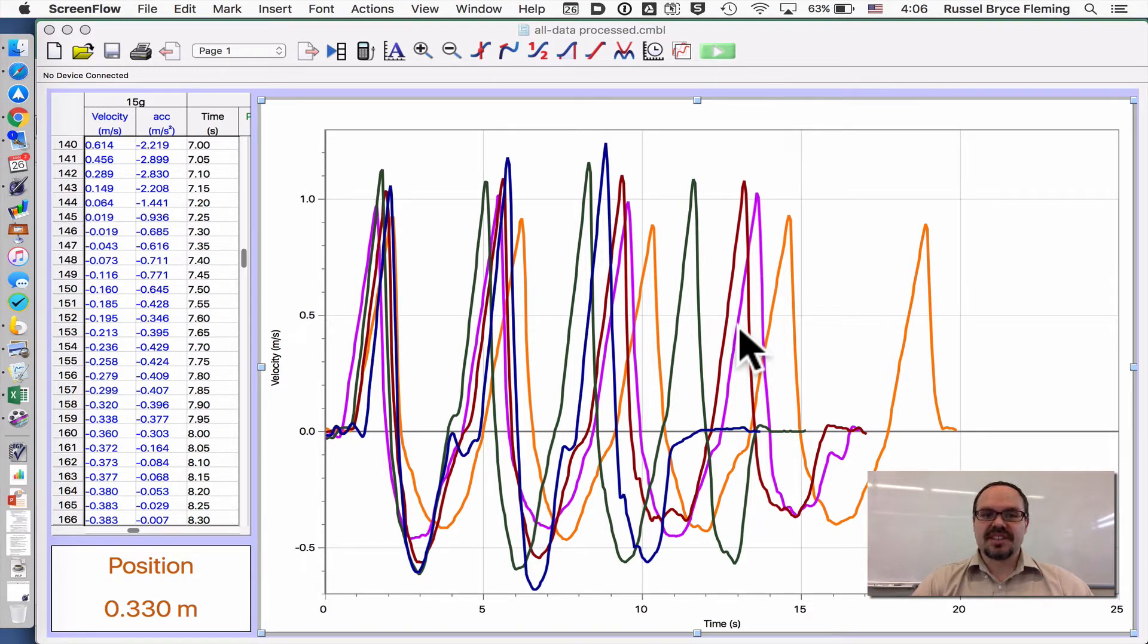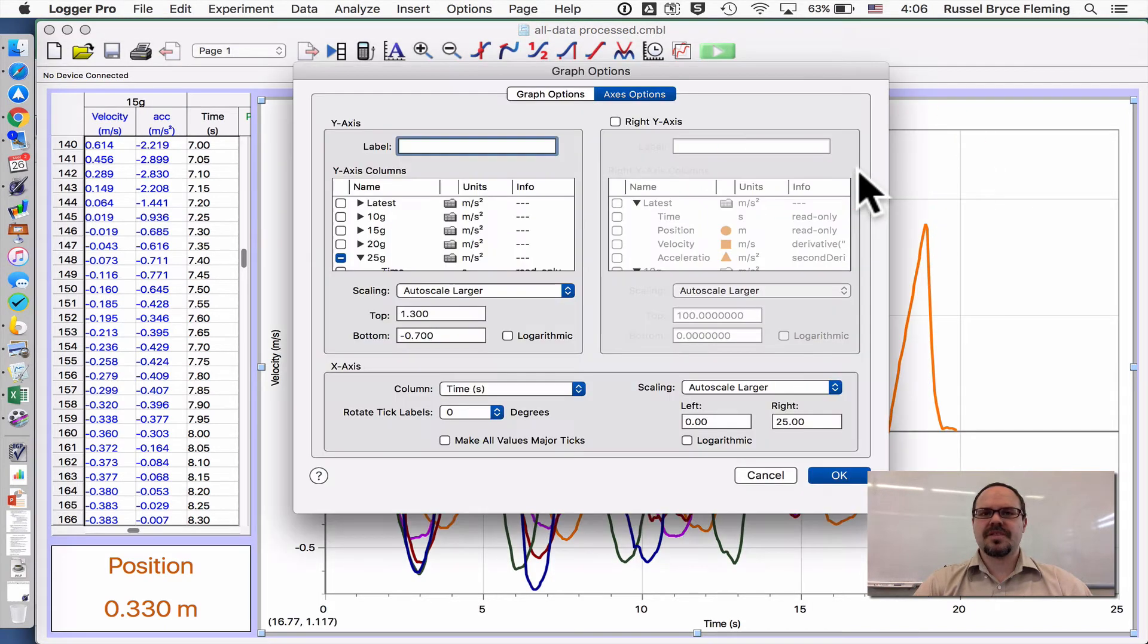You know the acceleration is the gradient of the velocity-time graph, and so to make things clear, we'll do one graph at a time. To only see one piece of data, you can double click the graph, and it will bring up something like this.